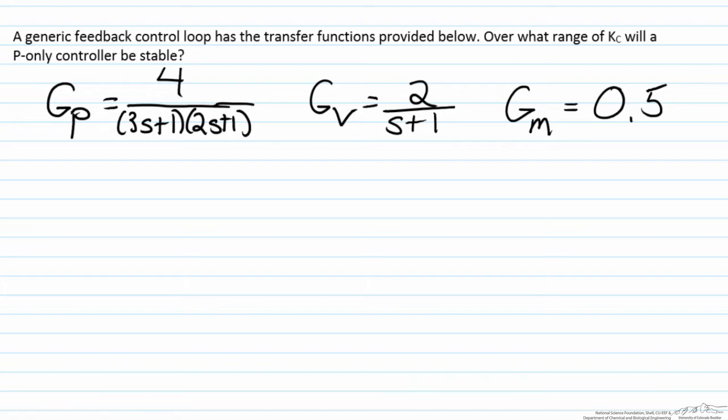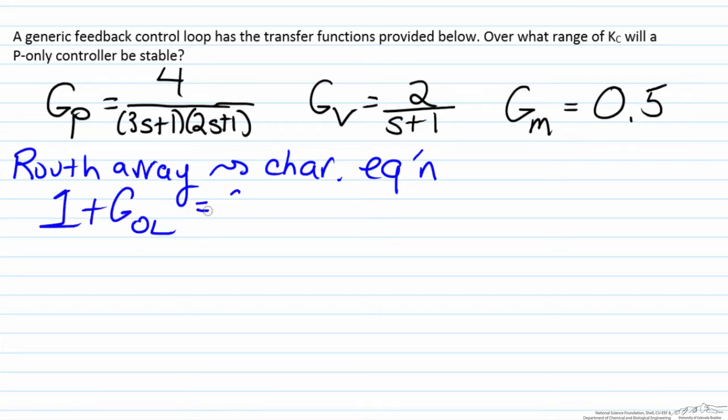There are a number of different ways this can be analyzed, but for this analysis we are going to use a Routh array. A Routh array requires the use of the characteristic equation, which is of the form 1 + G_OL = 0.